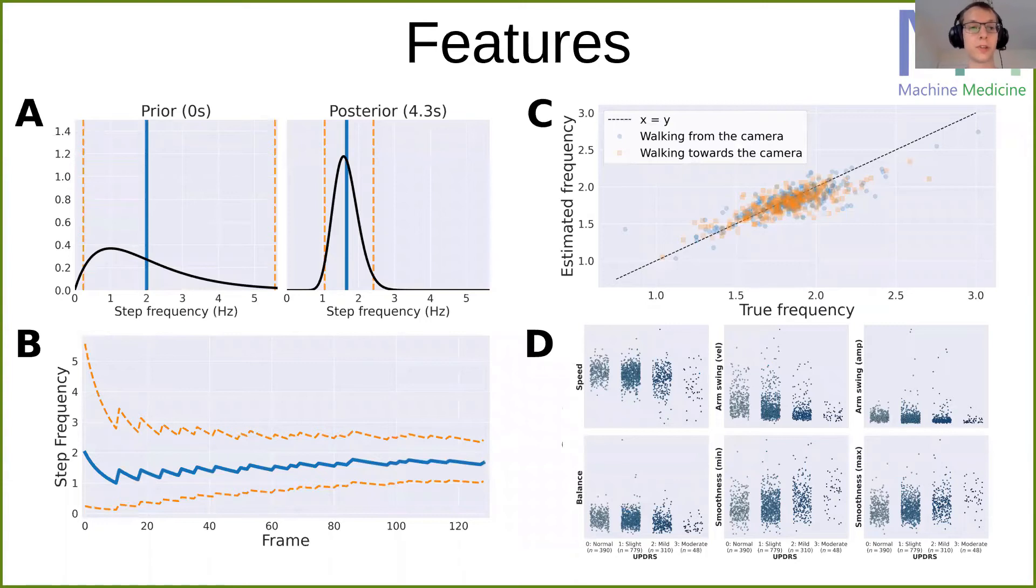For example, one of our features was a step frequency estimate, where we started off with a prior, and then on each frame we updated that prior with some data about their gait, which resulted in a posterior.